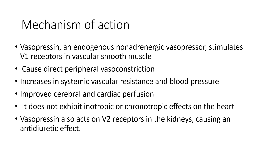Coming to the mechanism of action: vasopressin is an endogenous nonadrenergic vasopressor. It stimulates V1 receptors in vascular smooth muscle, causing direct peripheral vasoconstriction, increasing systemic vascular resistance and hence increasing blood pressure. It improves cerebral and cardiac perfusion and does not have inotropic or chronotropic effects on the heart. Vasopressin also acts on V2 receptors in the kidneys, causing an anti-diuretic effect.